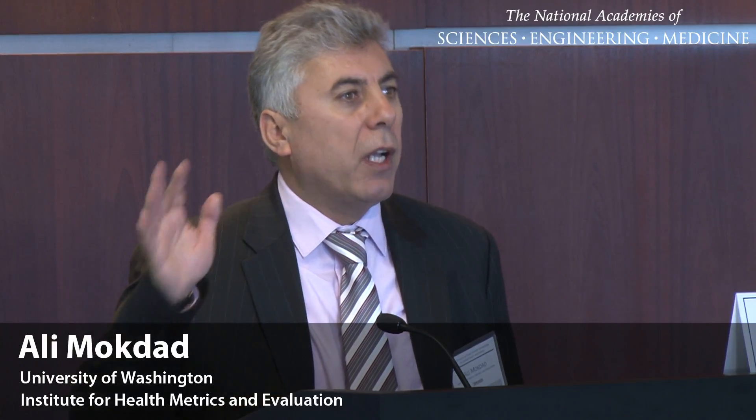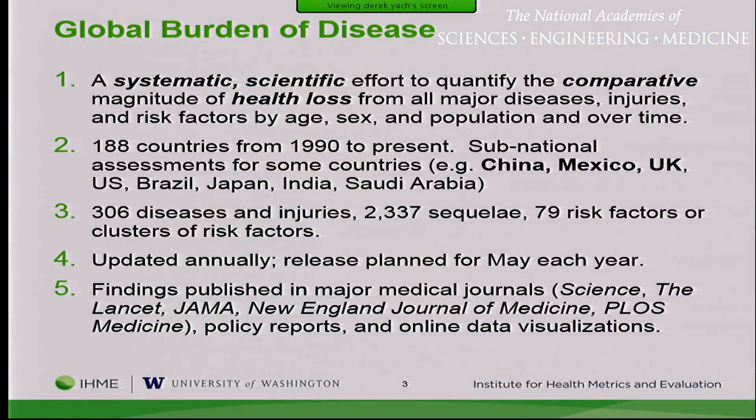GBD is a systematic scientific effort to quantify in a comparative magnitude the health loss for every country in the world by age, by sex. We have 188 countries and we do it from 1990 to now. It tells you, enables you to see what risk factors are changing, how mortality is changing. And in many countries right now we're able to do it at the sub-national level where we could look at disparities within a country.